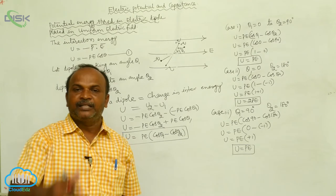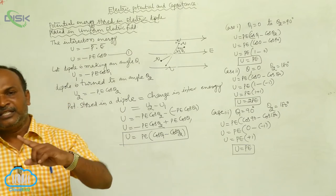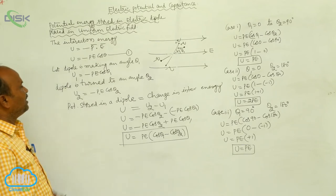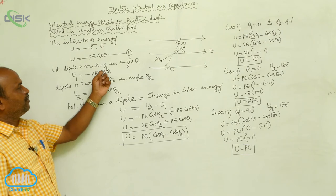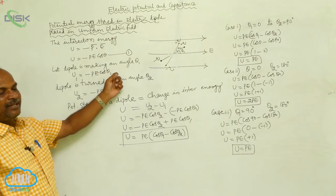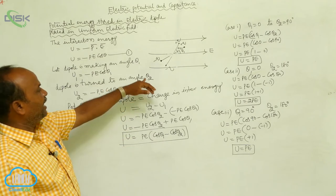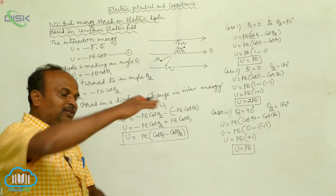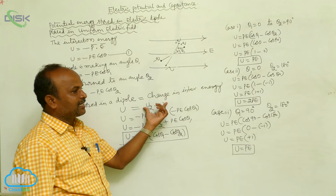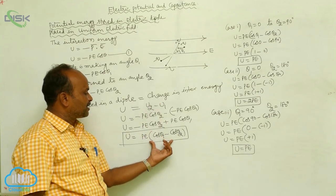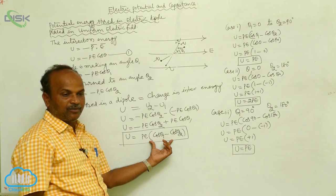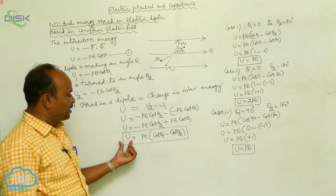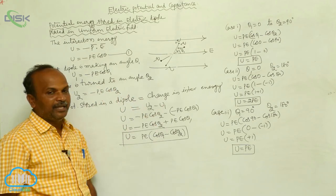I am rotating the dipole from θ₁ to θ₂. There is a change in interaction energy, and that change is stored in the form of electrostatic potential energy. U₁ = −Pe cosθ₁. When rotated to θ₂, U₂ = −Pe cosθ₂. The change U₂ − U₁ gives Pe(cosθ₁ − cosθ₂), which is the electrostatic potential energy stored.